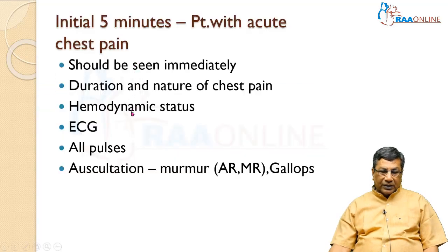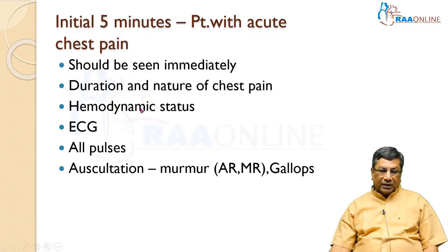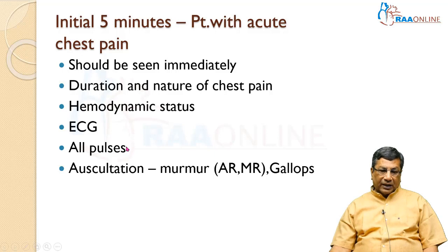The initial five minutes in any acute chest pain patient is very important. Any acute chest pain patient should be seen immediately and the ECG taken immediately. Before that we must have a focused history: the duration and nature of chest pain, hemodynamic status, whether the patient is in shock or hemodynamically stable. Within five minutes you must take the ECG. Remember to look at all pulses, because asymmetric pulses with predominant back pain may suggest dissection.